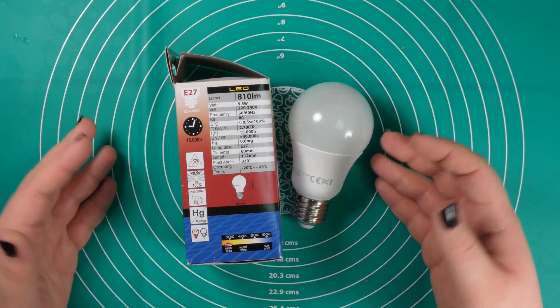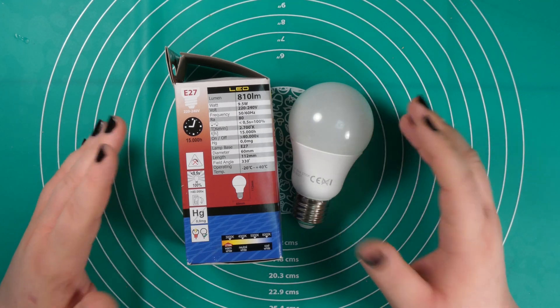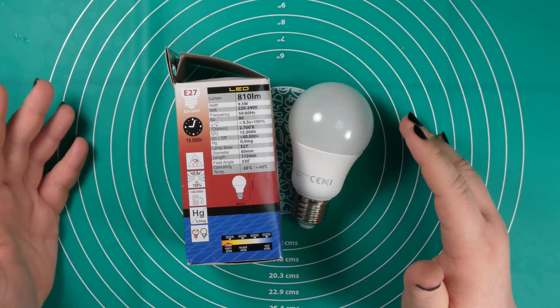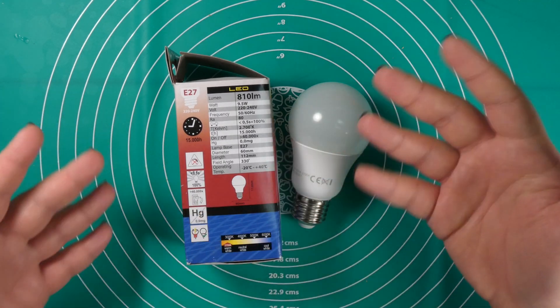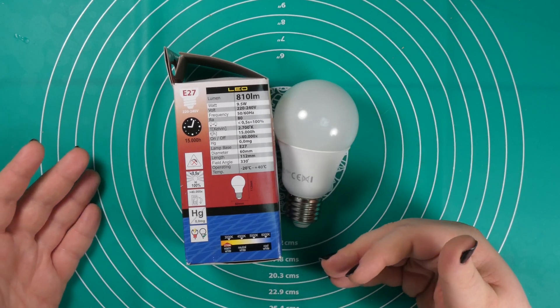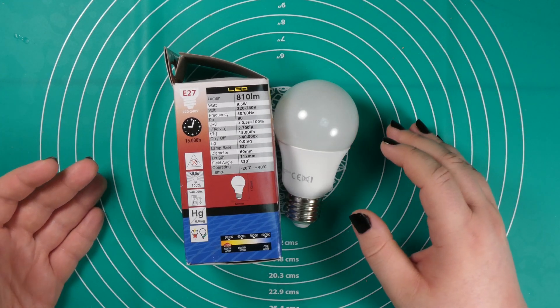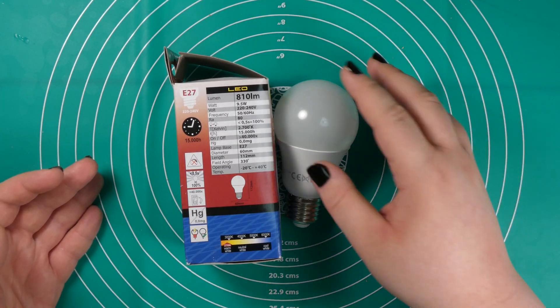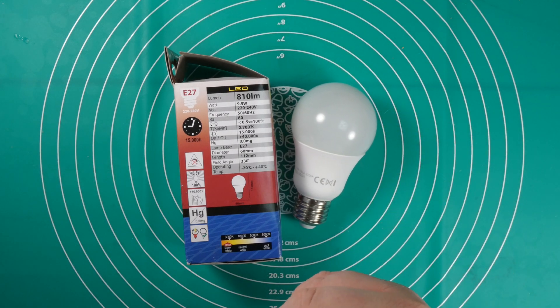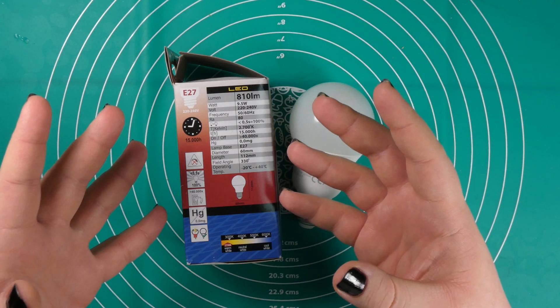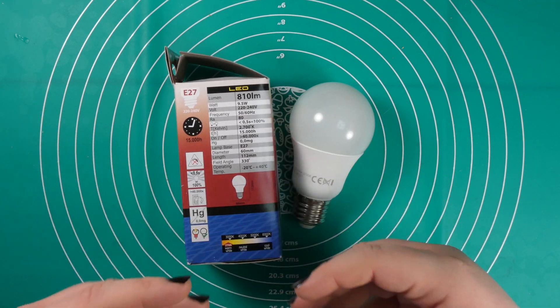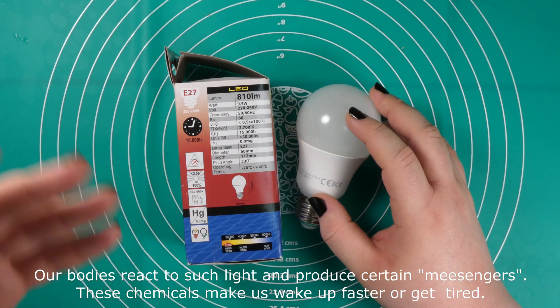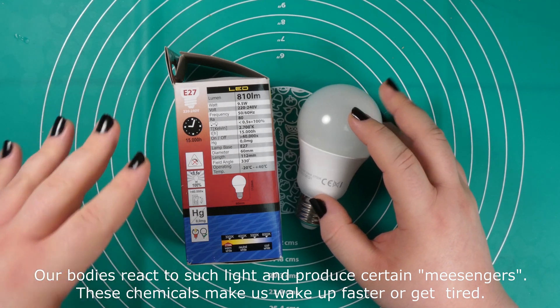We adapted over thousands of years to the lighting conditions on earth. This means essentially in the morning when we wake up, the lighting outside is in the bluish spectrum, so our bodies adapted to send out hormones or chemicals in the morning that react to blue light for us to wake up.